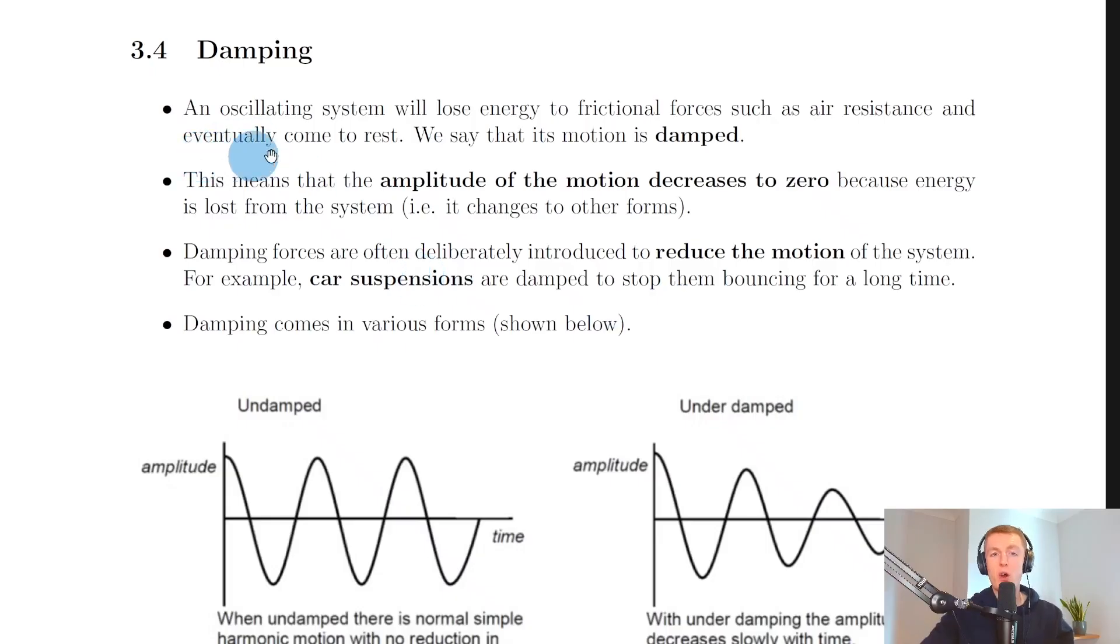Now it says here that an oscillating system will lose energy to frictional forces such as air resistance and eventually come to rest. We say that its motion is damped. This means that the amplitude of the motion decreases to zero because energy is lost from the system, i.e. it changes to other forms.